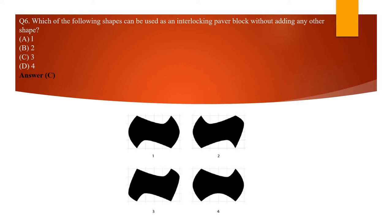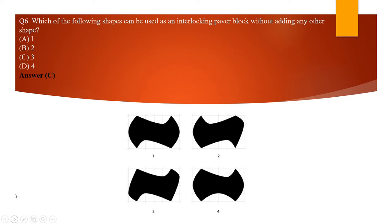Another simple question from the paper: which of the following shapes can be used as interlocking pavers without gaps? When you lay certain shapes, concave areas are created leaving empty spaces. But for the correct option, one part can easily fit into the adjacent area — neither on the left/right nor on the top/bottom in other cases — but with the correct shape, the part fits perfectly and the whole pattern can be laid without any gaps or empty spaces.